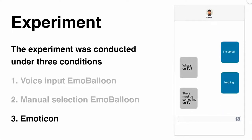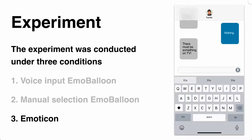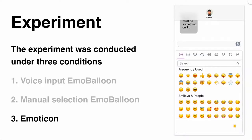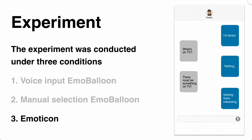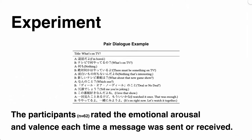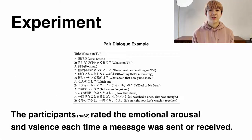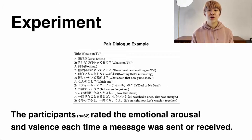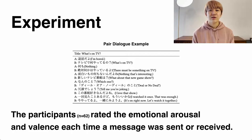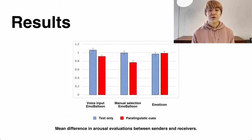In the Emoticon condition, we developed a text input text chat application that allows users to freely input emoticons in their messages, similarly to current popular text chat applications. Each participant role-played a dialogue script of an emotional situation with a partner in a randomly assigned condition and rated the emotional arousal and valence contained in each message on a five-point scale each time a message was sent or received.